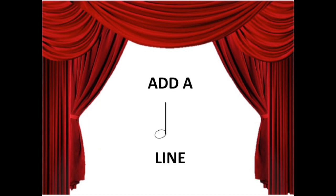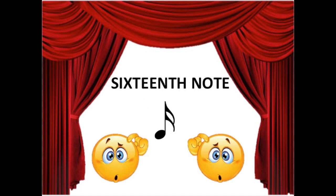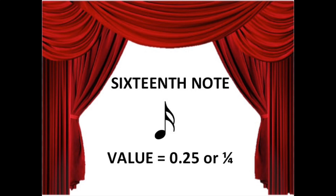First you draw a circle at a line for swag, then you shade the circle in and you add two flags. A 16th note can get people confused. 0.25 is its value.